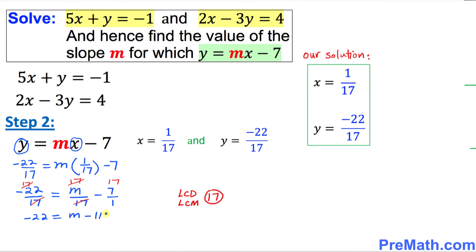Now I am going to move this negative 119 on the other side, so we simply got negative 22 plus 119 equal to m. If you simplify it, we are going to get m equal to 97.